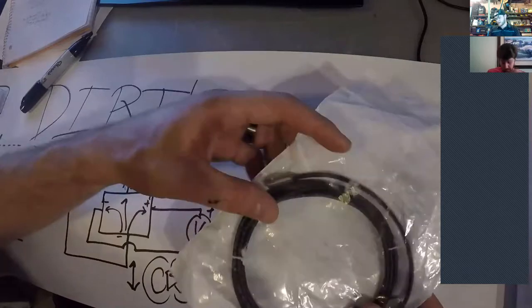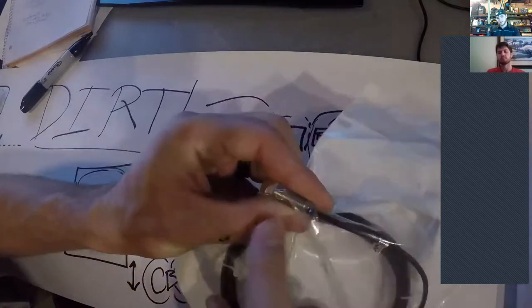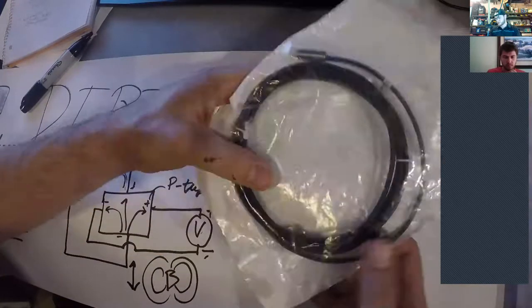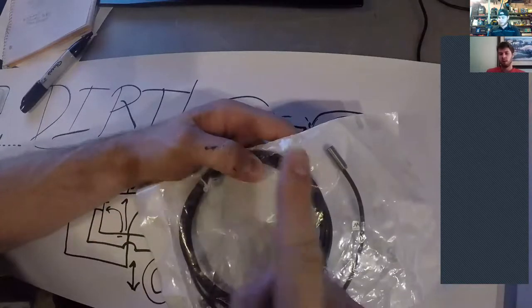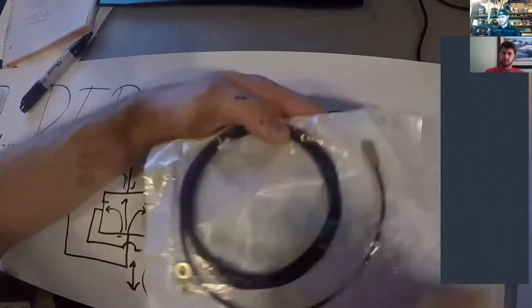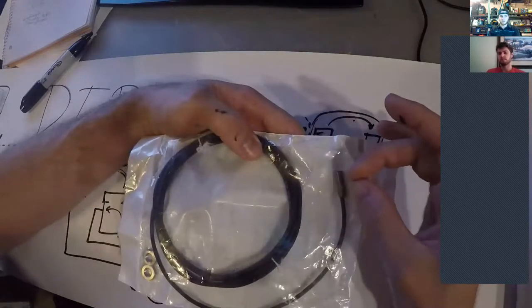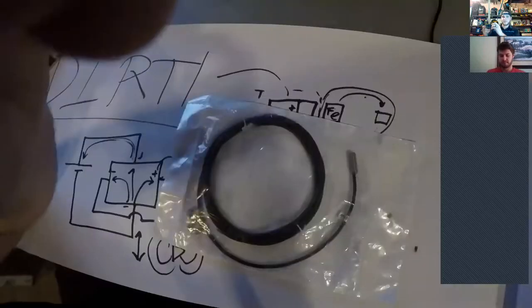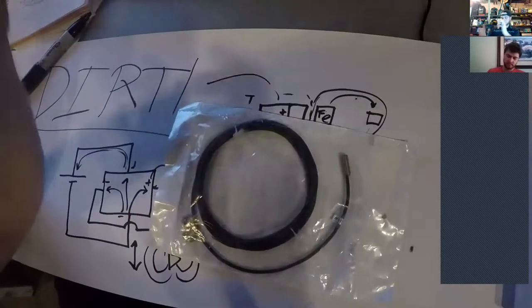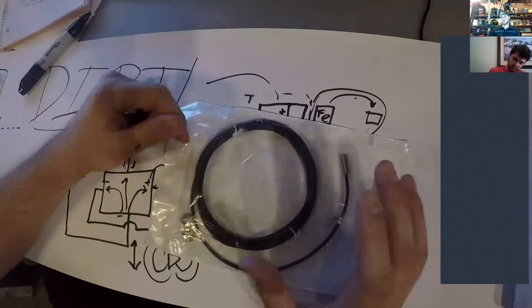So we actually have a proximity sensor. This is one of the many awesome things that automation direct donated to us. So you can see here, it's got a cylindrical body. That's a threaded shaft and it comes with these two nuts. And so basically you just drill a hole in a metal plate, stick this through it and stick the two nuts on either side of it.